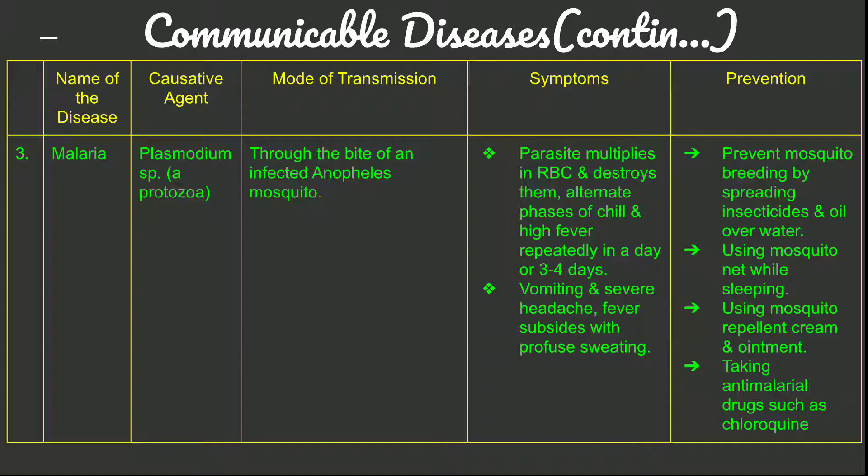Symptoms of malaria include the Plasmodium parasite multiplying in red blood cells and destroying them, alternate phases of chill and high fever occurring daily or every three to four days, vomiting and severe headache, and fever subsiding with profuse sweating. Preventive measures include spreading insecticides or oil over water to prevent mosquito breeding, using mosquito nets while sleeping, mosquito repellent cream, and taking anti-malarial drugs such as chloroquine.